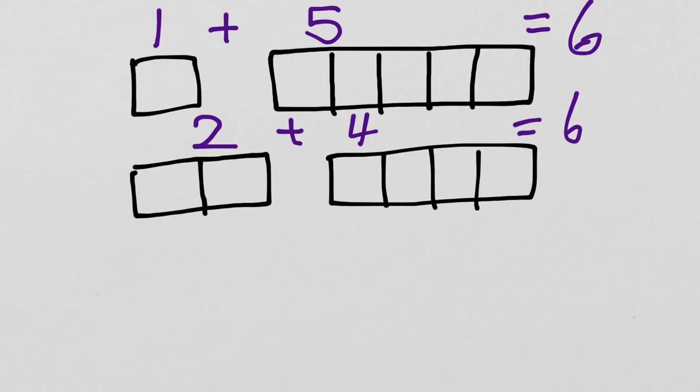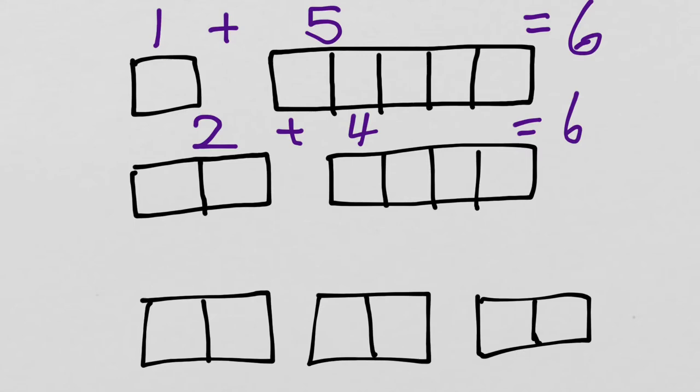And that's what addition means, is to put two things together. Then we might try two cubes on one side and that would make four on the other. And we would have two plus four equals six. We would then continue this process until we had figured out all the different ways that you could make six.